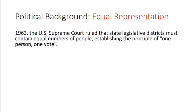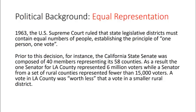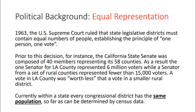We'll start with equal representation. In 1963 the US Supreme Court ruled that state legislative districts must contain equal numbers of people, establishing the principle of one person, one vote. Prior to this decision, the California State Senate was composed of 40 members representing its 58 counties. As a result, one senator from Los Angeles County represented six million voters while a senator from a set of rural counties represented fewer than 15,000 voters — meaning a vote in LA County was worth less than a vote in a smaller rural district. Currently, every congressional district has the same population so far as can be determined by census data.